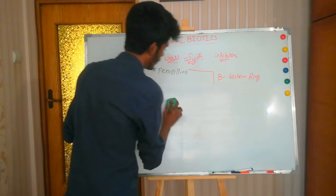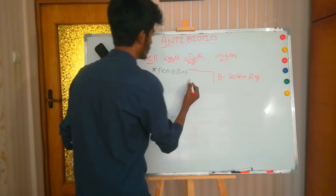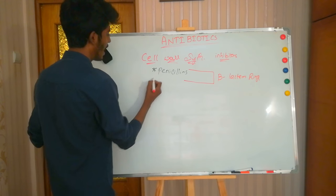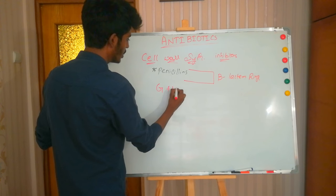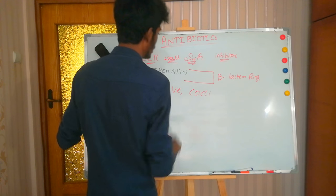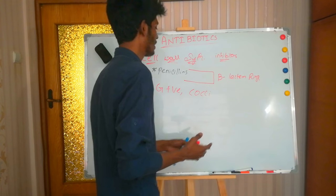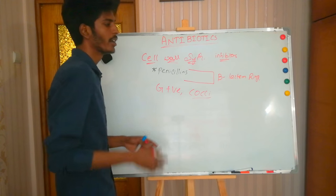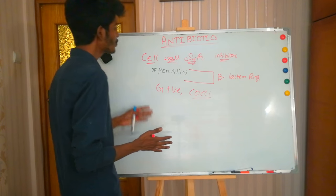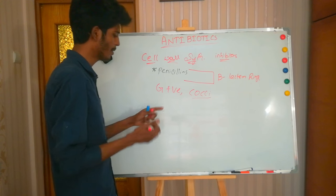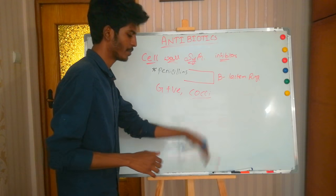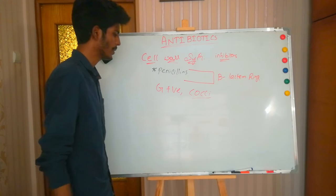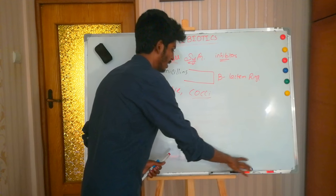The spectrum of action of penicillins is gram-positive bacteria and cocci. Examples of gram-positive infections include Listeria and Neisseria gonorrhoeae, and cocci such as staphylococci and streptococci. So if gram-positive and cocci is the spectrum of action of penicillins, we can use them in gram-positive and cocci infections. Penicillins are further divided into subgroups, including natural penicillins.